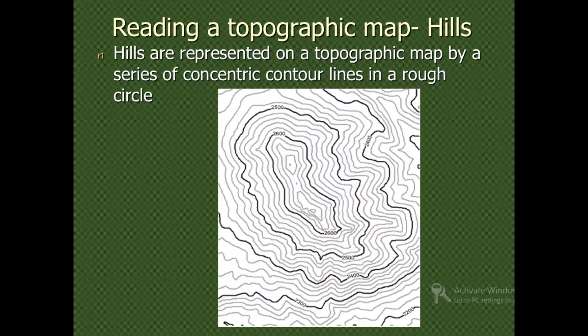Hills are represented on topographic maps by a series of concentric contour lines in a rough circle.